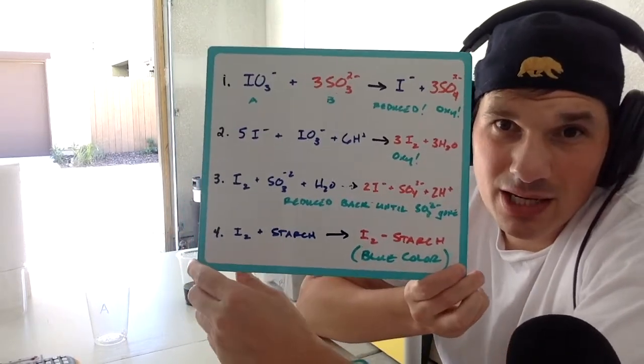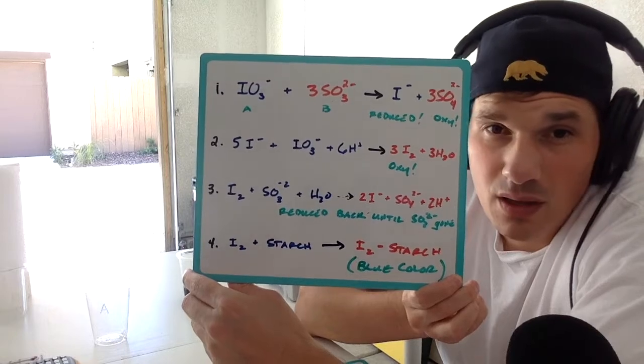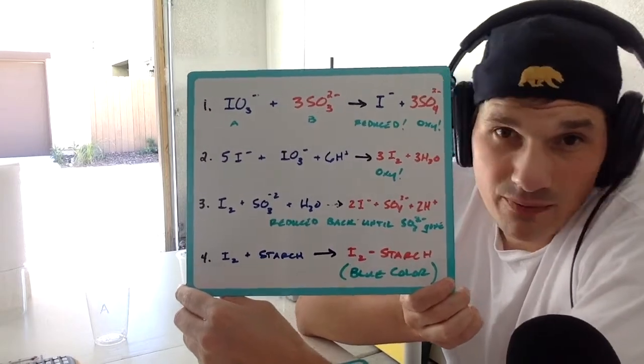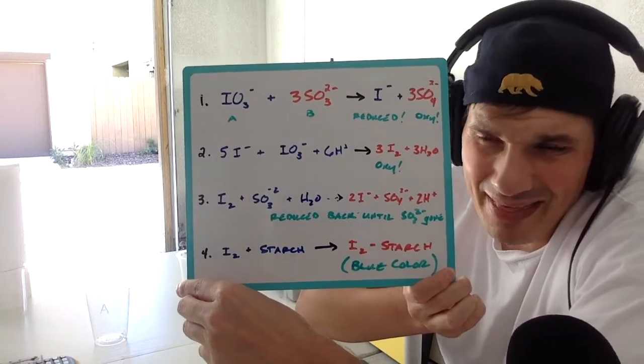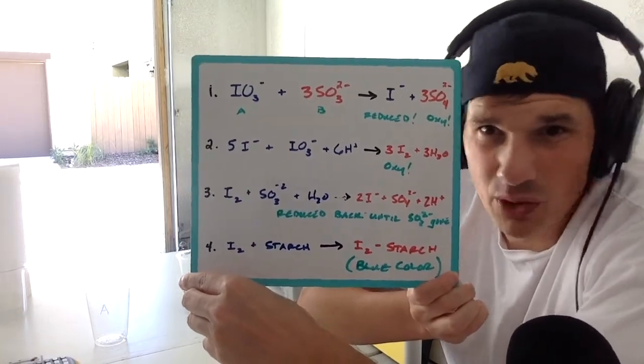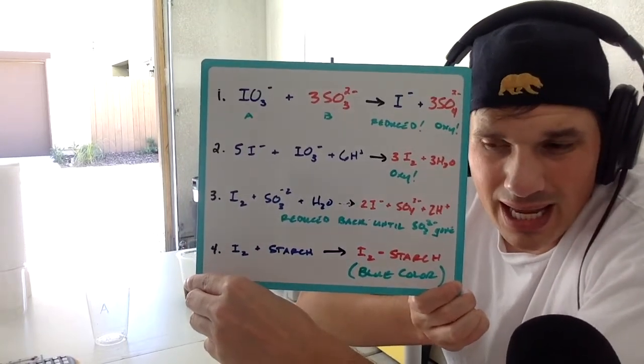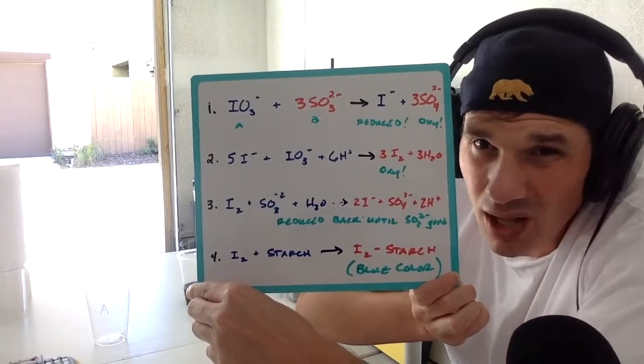So now these reactions are going back and forth. And notice number three. Hold on a sec. I had that I2, that iodine just floating around in solution. And all of a sudden, it goes back to iodide. What gives?